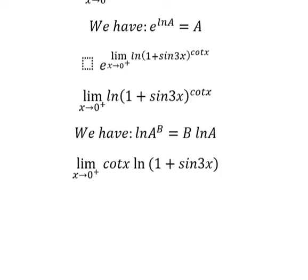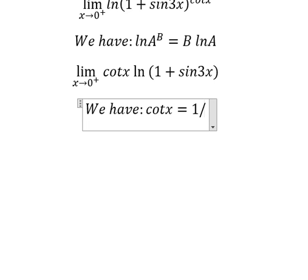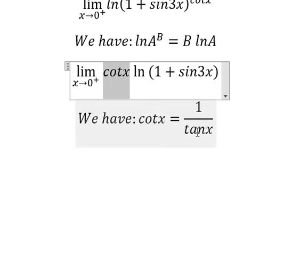Next we have the third formula in here: cotangent x equals 1 over tangent x. Now we need to transform this one into this one.